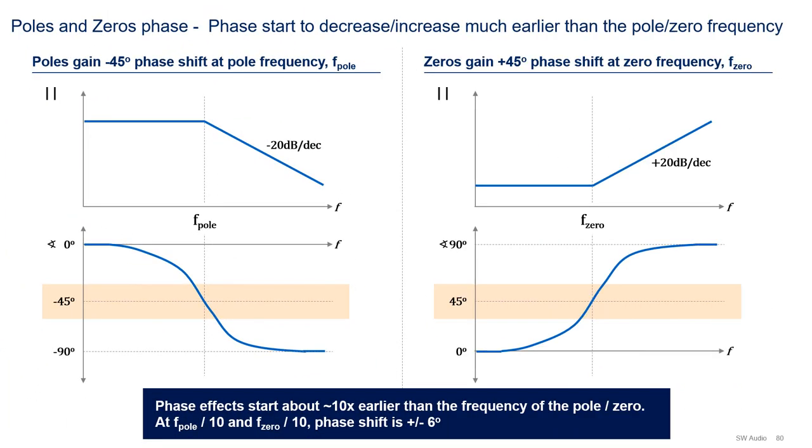One word of caution because I did not stress this in the previous slide. While the effect on magnitude from a pole and a zero roughly starts at the pole and zero frequency, phase effects start much earlier. In fact, at the pole or zero frequency, phase has already changed by 45 degrees, as you can see on the plots shown here. To give you another data point, at 10x below the pole or zero frequency, phase has shifted by 6 degrees. Finally, note that phase is symmetric around the pole or zero frequency. Hence, at 10x above the pole or zero frequency, the phase shift will be plus minus 84 degrees respectively, or 6 degrees of 90 degrees.